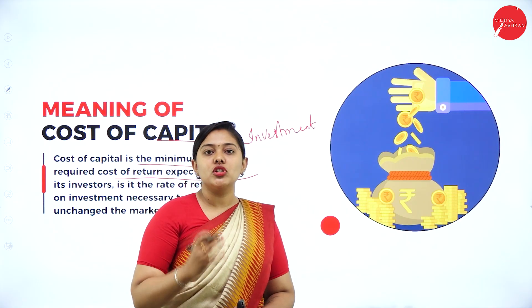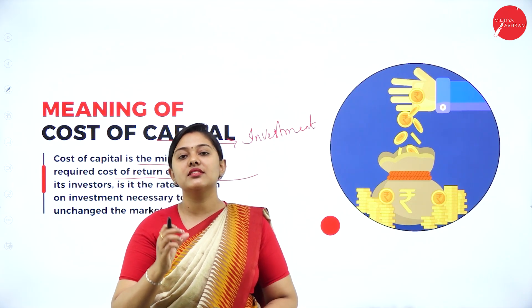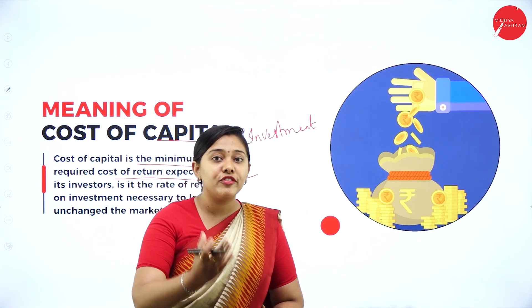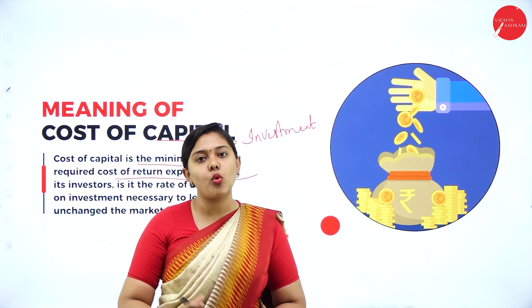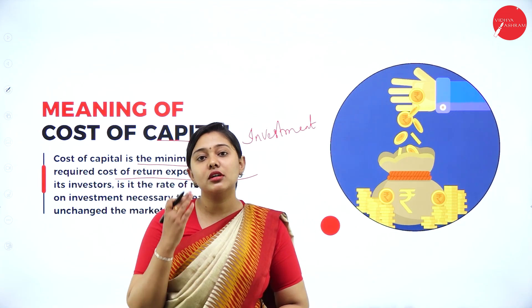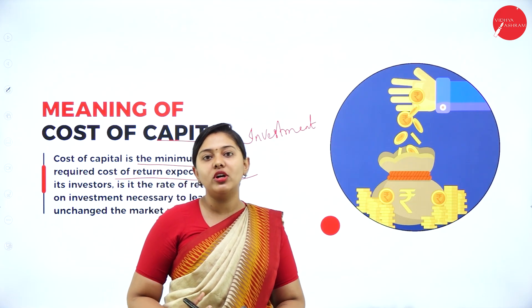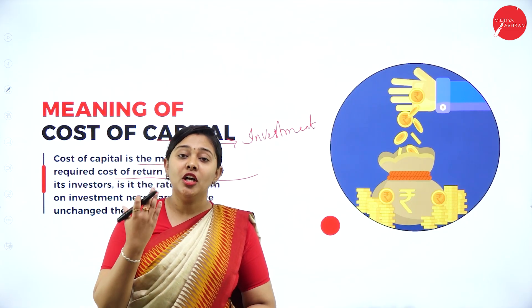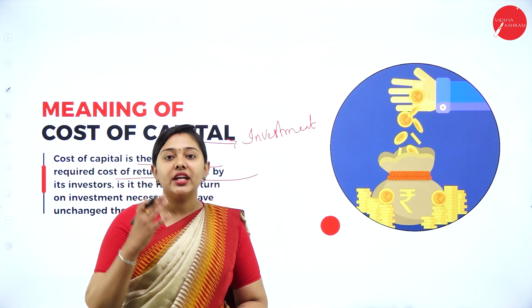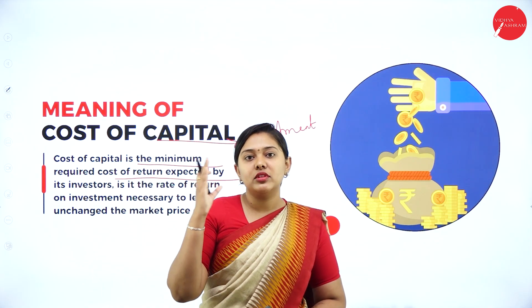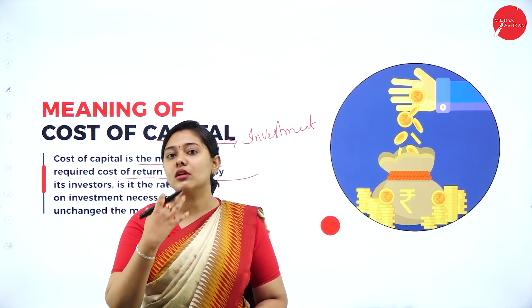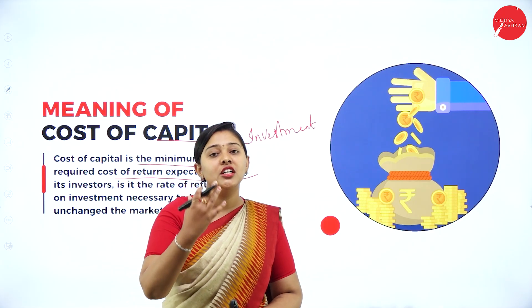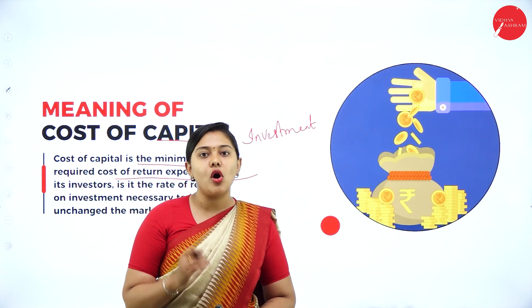For raising a debenture, you have to pay interest, and that interest is called as cost of debenture. If you are issuing preference shares, you have to give a preferential dividend to the shareholder — that is the cost of preference. After distributing dividends and paying preference shareholders, the equity shareholders will get their return last. All these costs associated with capital are called cost of capital.